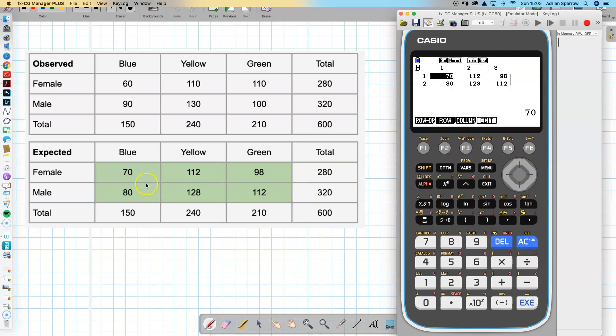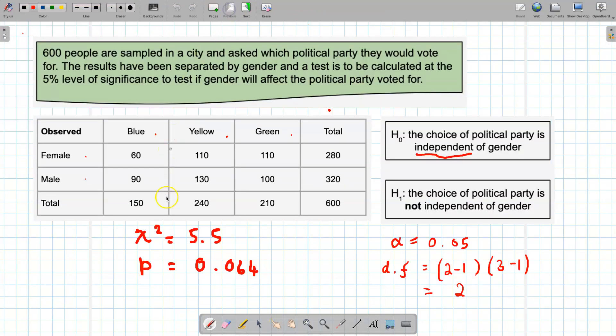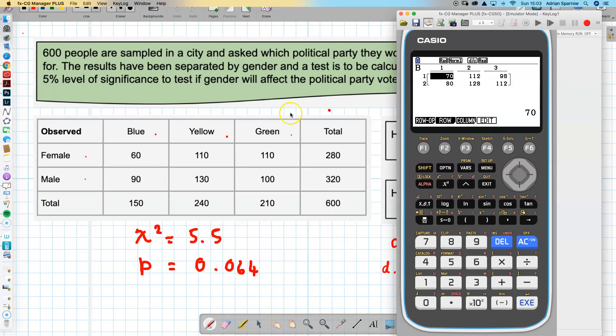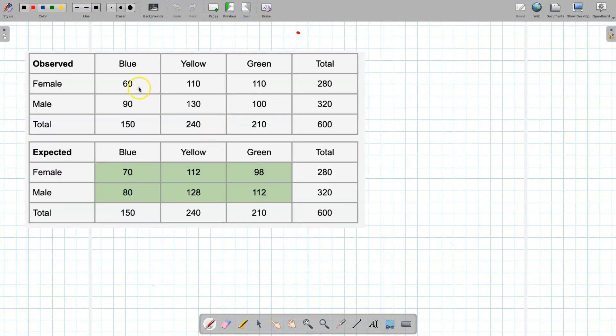Now although your calculator can get all these values for you, you also need to know how you can actually work them out without doing the test. It's good background knowledge to know how this chi-squared test statistic that we had here comes about. So how do we do that without a calculator?